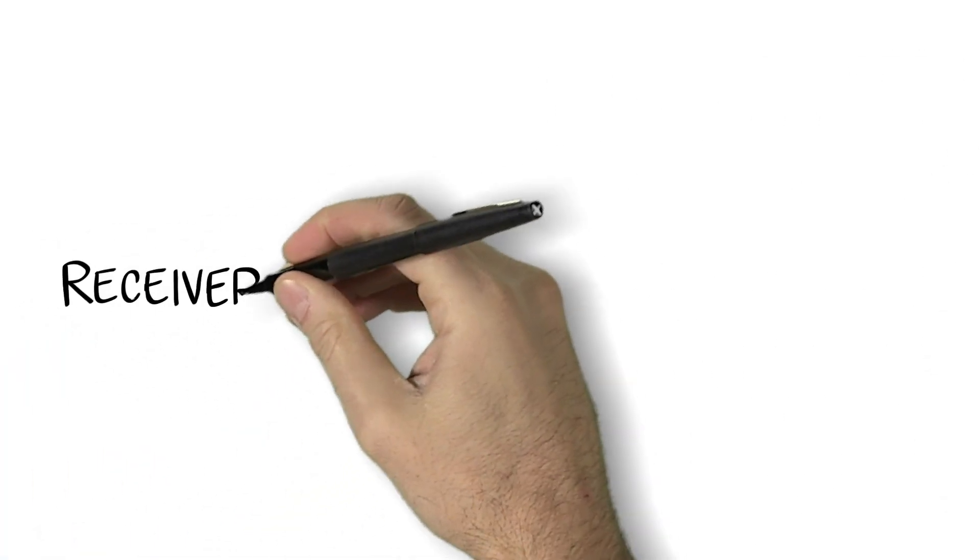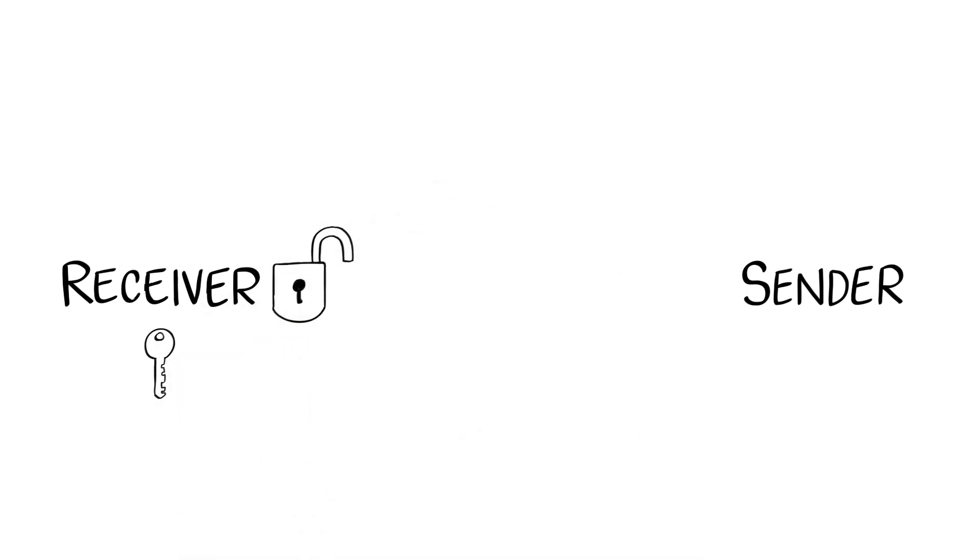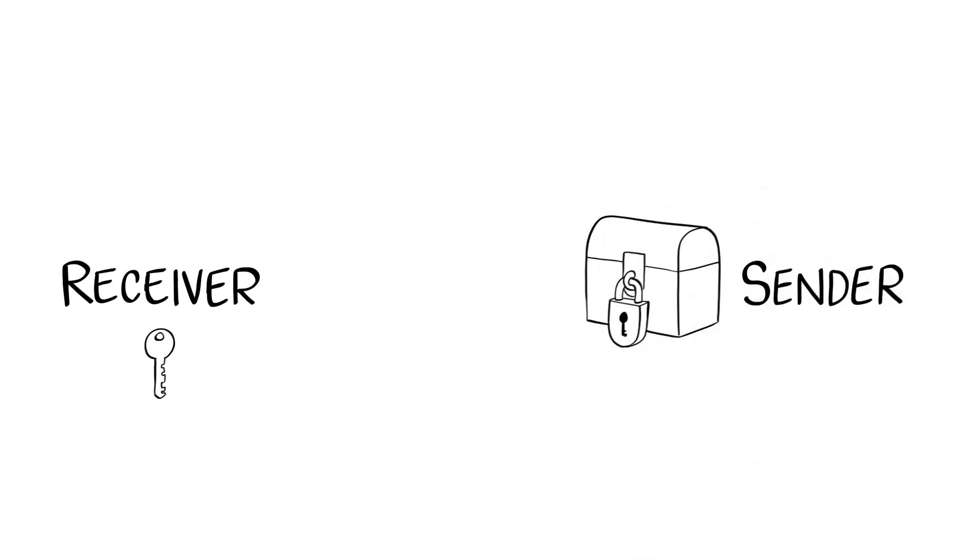So, what's a better way? Public key encryption only sends the lock to encrypt the message and keeps the secret code or key on the receiver's end, so hackers don't have an opportunity to intercept the private key.